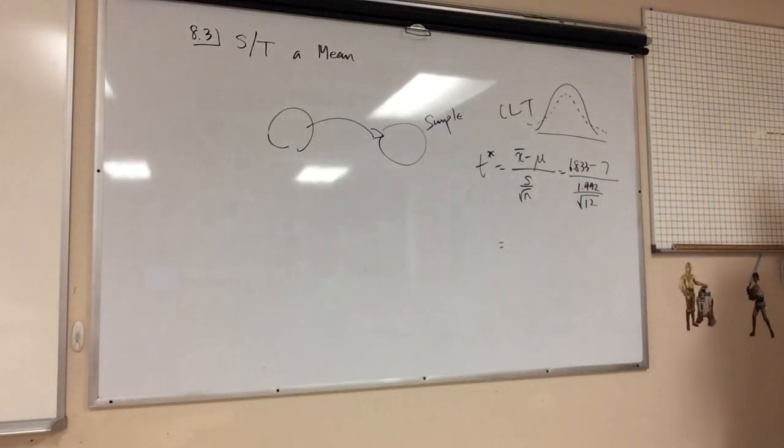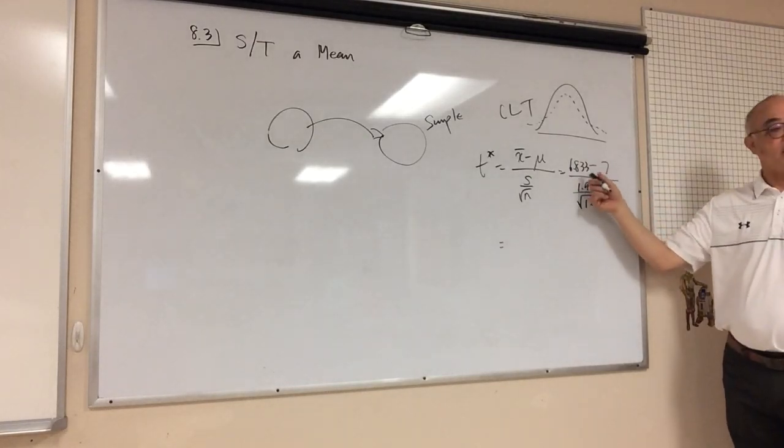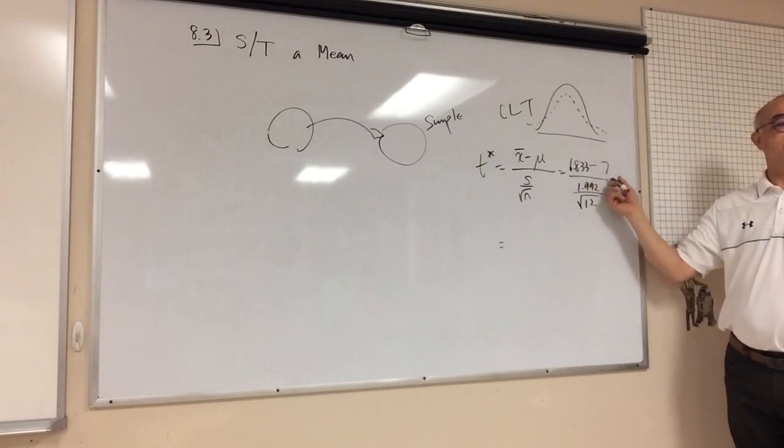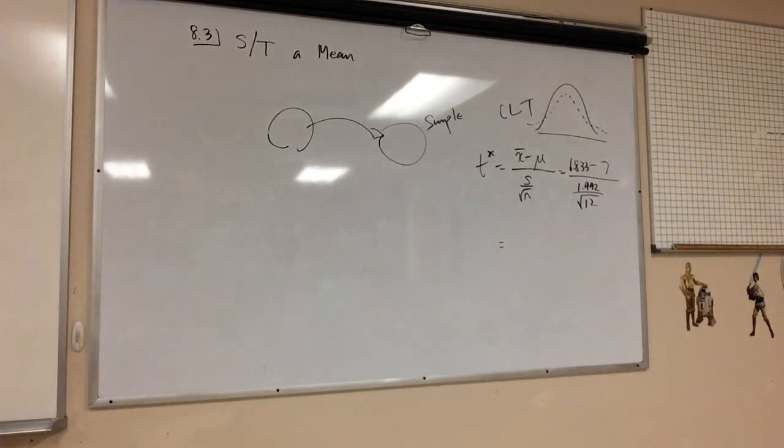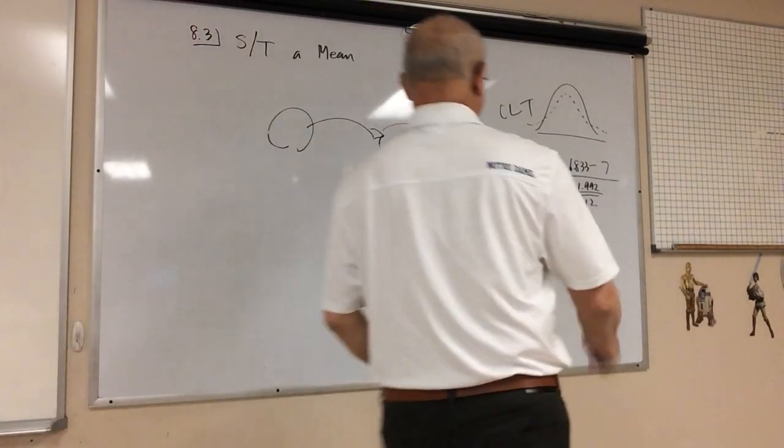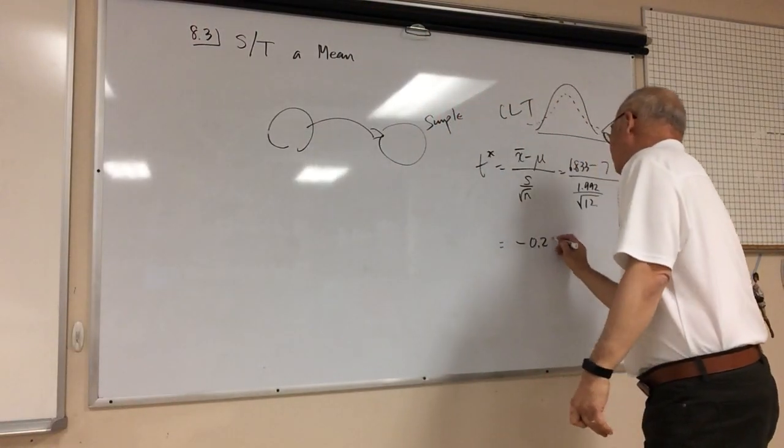And if you do this, you will find the t to become, is the t going to be positive or negative? Negative. Why is it going to be negative? Because the top is negative, right? Because this is less than 7. So it's going to be negative. And if I do that, I'm going to get negative 0.290.